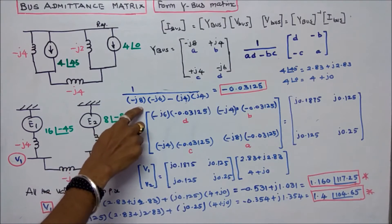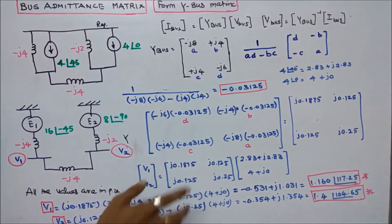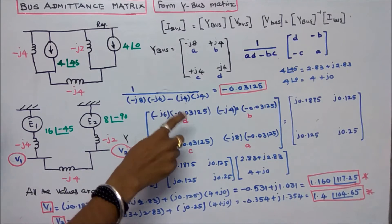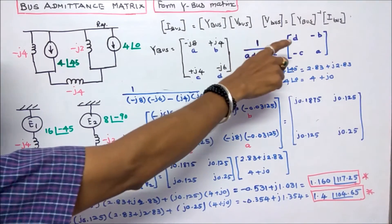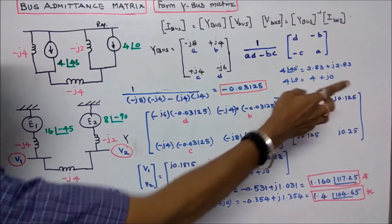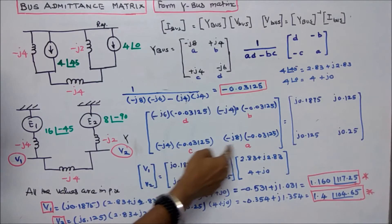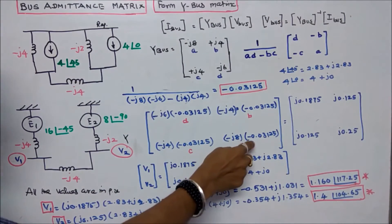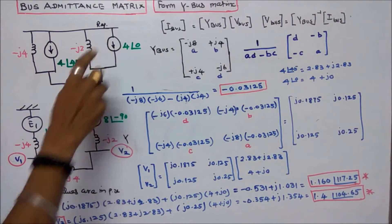Computing AD minus BC: minus J8 times minus J6, minus J4 times J4, gives a determinant factor of minus 0.03125. Multiplying by D (minus J6) gives J1.875. The minus B element (minus J4) times minus 0.03125 equals J0.125. Similarly, minus C (minus J4) times minus 0.03125 equals J0.125. And A (minus J8) times minus 0.03125 equals J0.25. This gives the Y-bus inverse matrix. We then convert from polar to rectangular form.